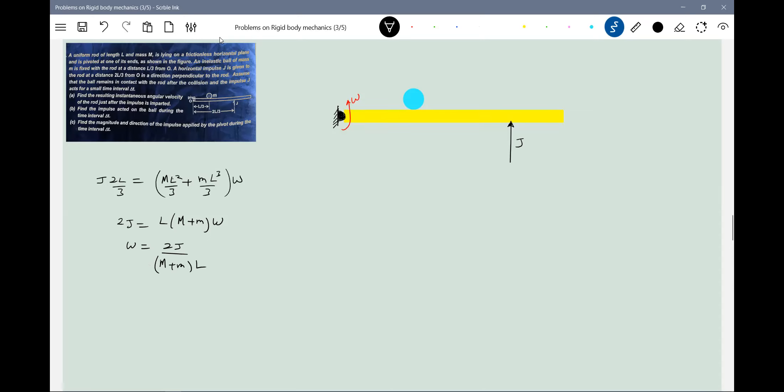I think there are some passages you can manage. J into two L by three. No, I think I took it correctly, into two L by three. Square, moment of inertia will be ML square by three. I see some corrections are there.